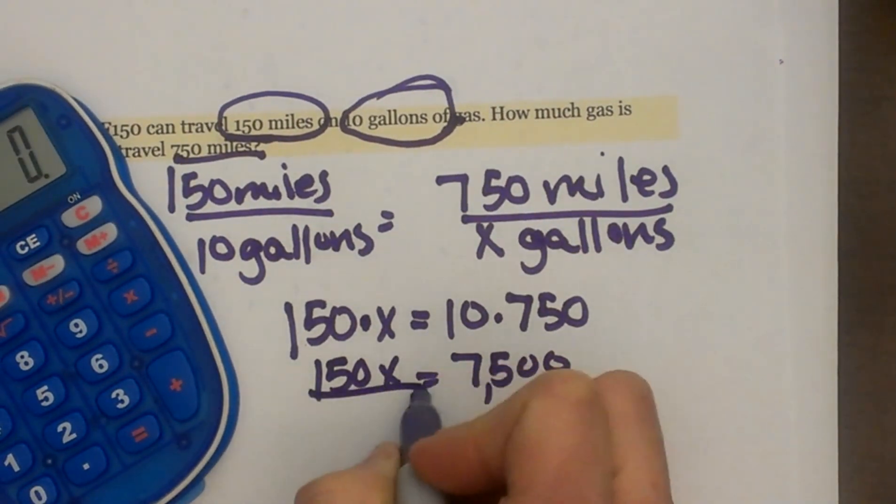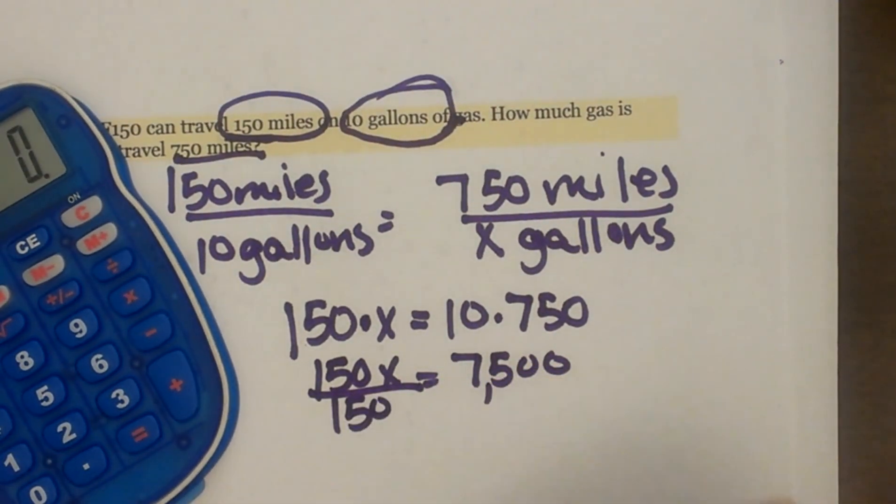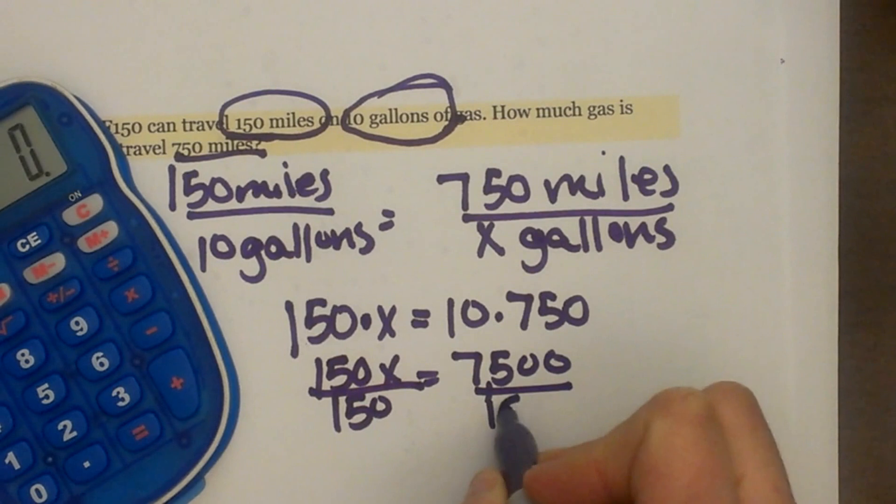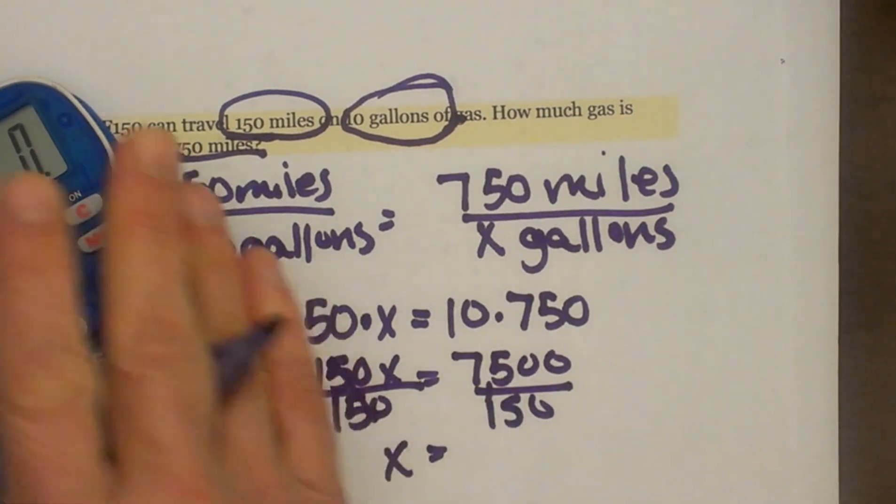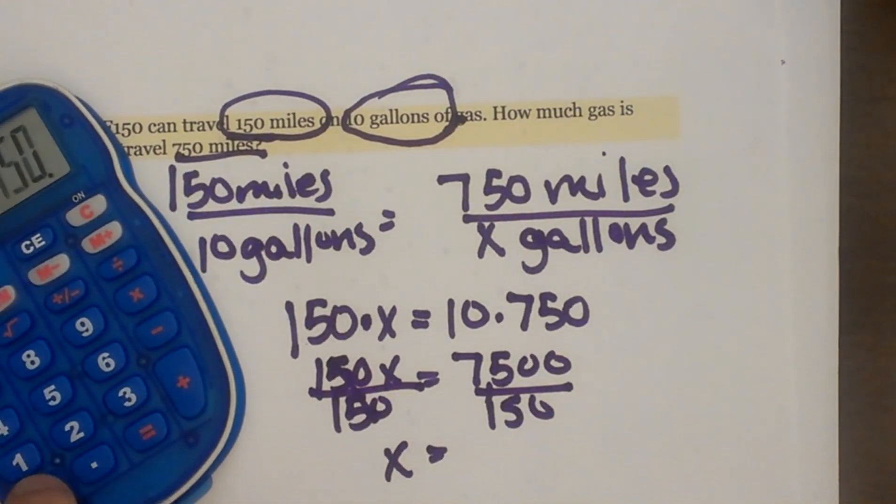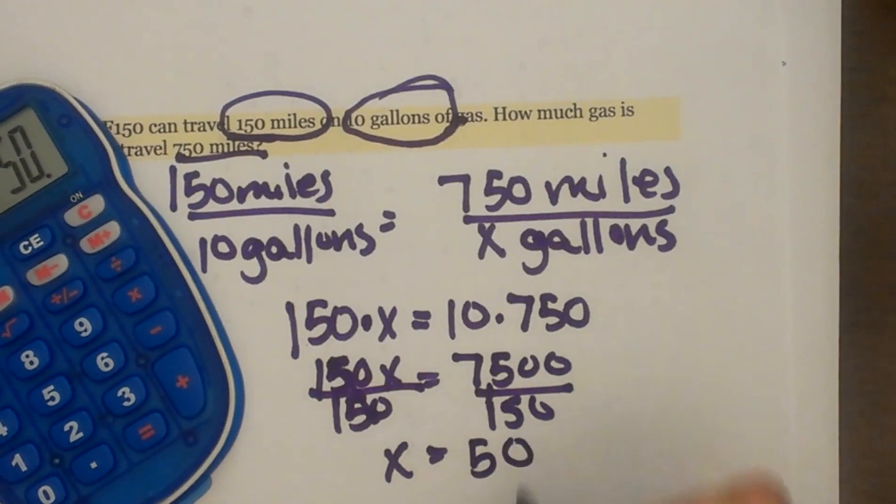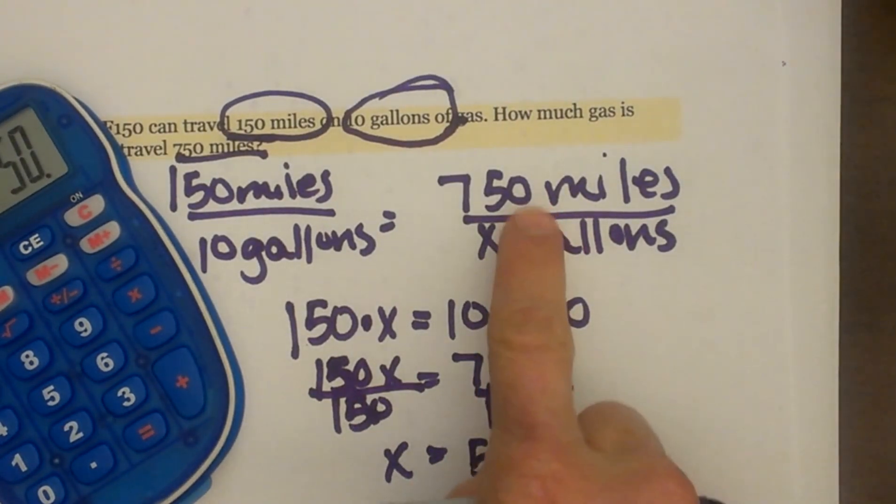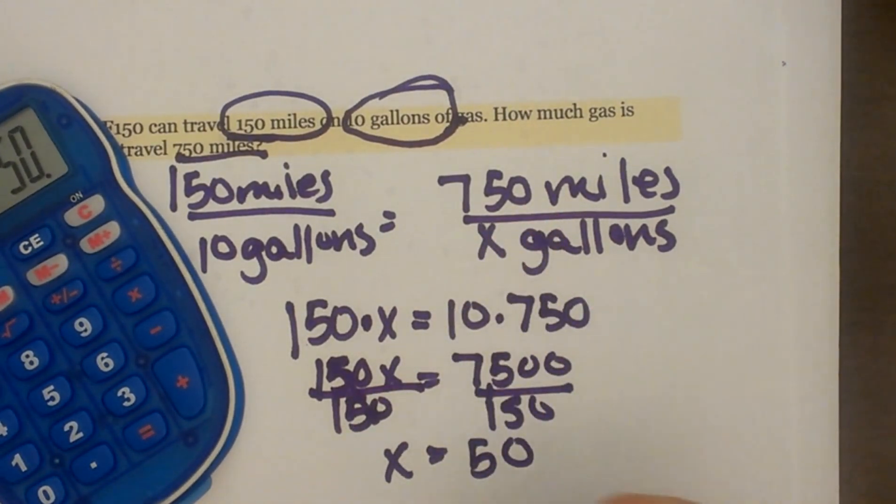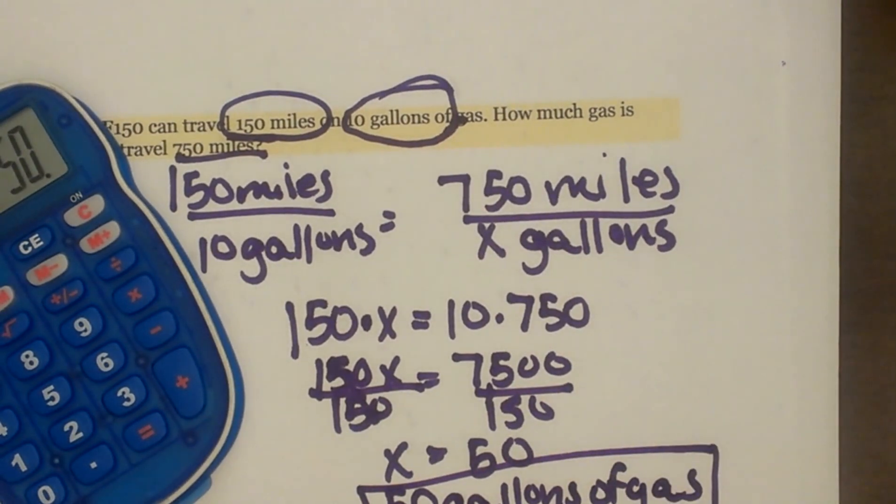Now to solve for x we're just going to divide both sides by 150. So we get x equals, let's take 7,500 divided by 150 and that gives us 50. Okay, so what does 50 represent? 50 represents gallons of gas. So we will use 50 gallons of gas and that is the answer to this word problem.